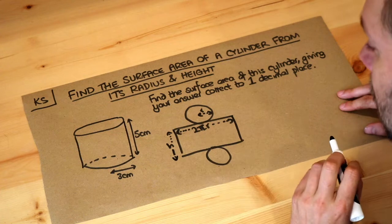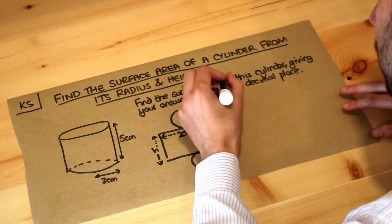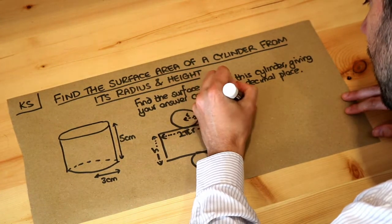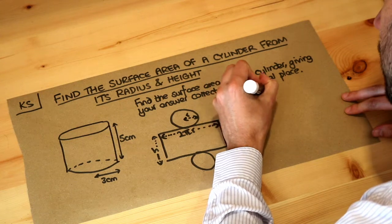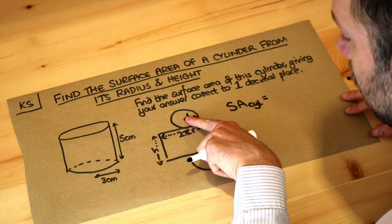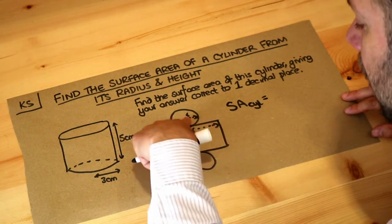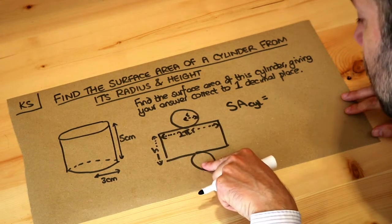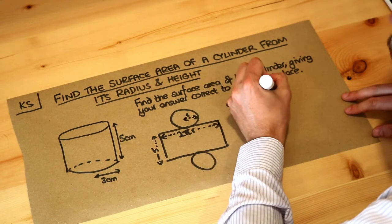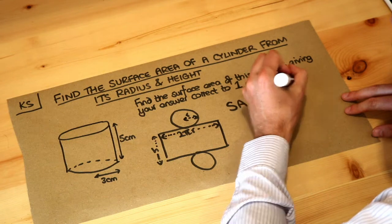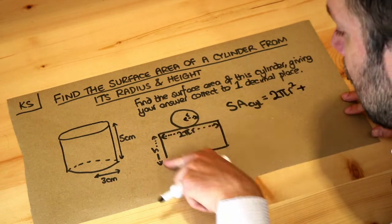So let's think about what the total area is here. Well the total surface area, let's say SA, of a cylinder is equal to the area of the circle at the top which is πr² plus the circle at the bottom, another πr², so we've got two lots of πr² and then we've got the area of this rectangle.